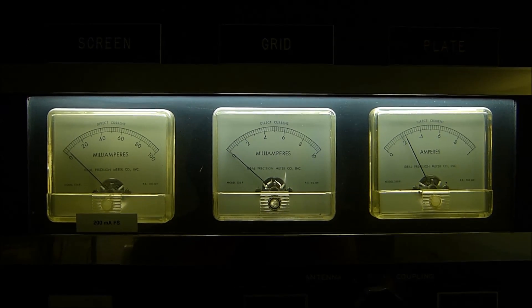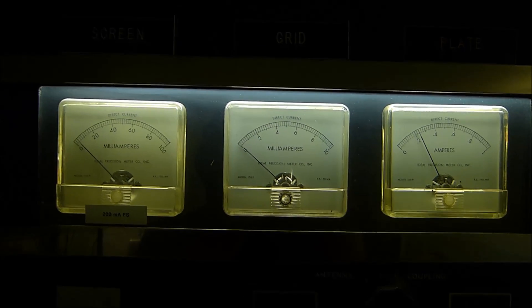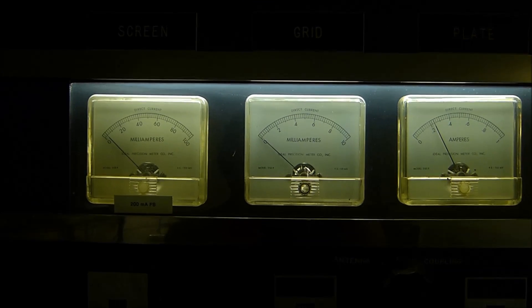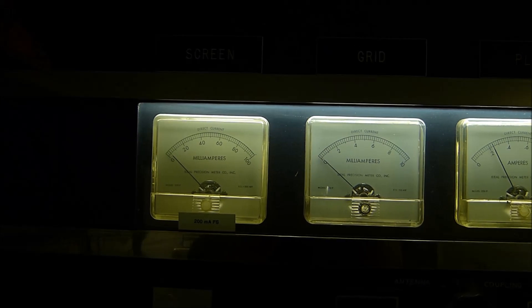One on the right is the plate current idling at about 240 milliamps. 3500 volts on the plate and of course everything else is at zero. The middle one doesn't do anything, it's not being used. Top one is the grid current.